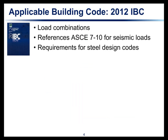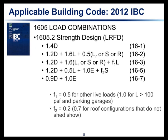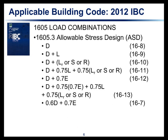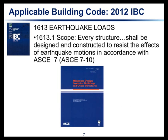Starting with the building code — you know what's in there, but just as a general outline — it has the load combinations you use for design. It references ASCE 7-10 for seismic loads and other structural loading, and also has the requirements for when to use the seismic provisions. The load combinations are listed here on this slide for strength design, or LRFD, which corresponds to the load resistance factor design as given by AISC. These should look familiar to anyone doing LRFD design. And perhaps more familiar are the allowable stress design, or ASD, load combinations. The IBC also discusses earthquake loads and points to ASCE 7 for determining those loads on the structure, in Section 1613.